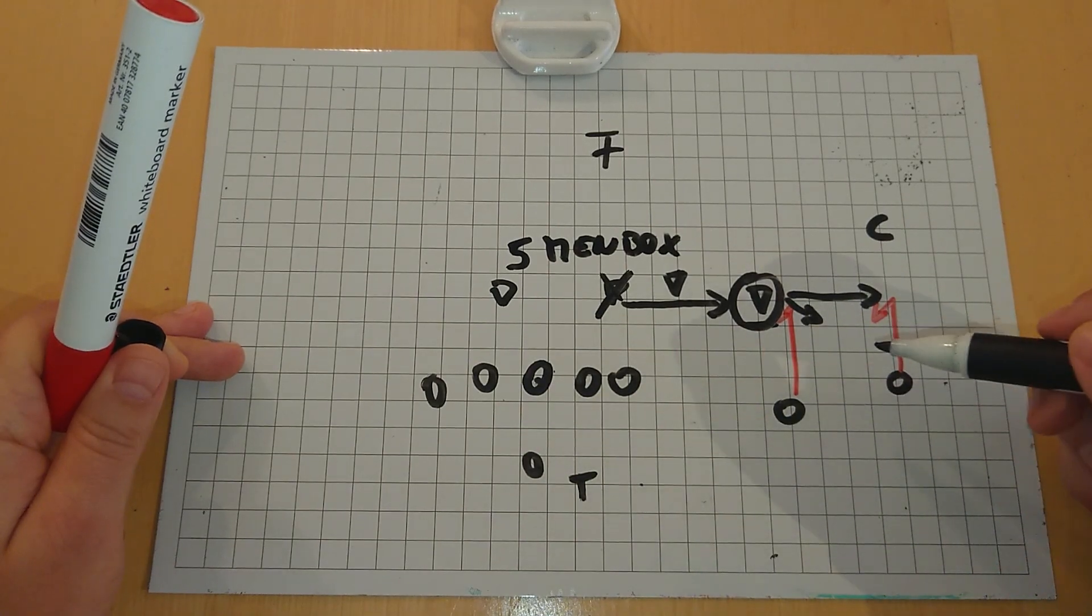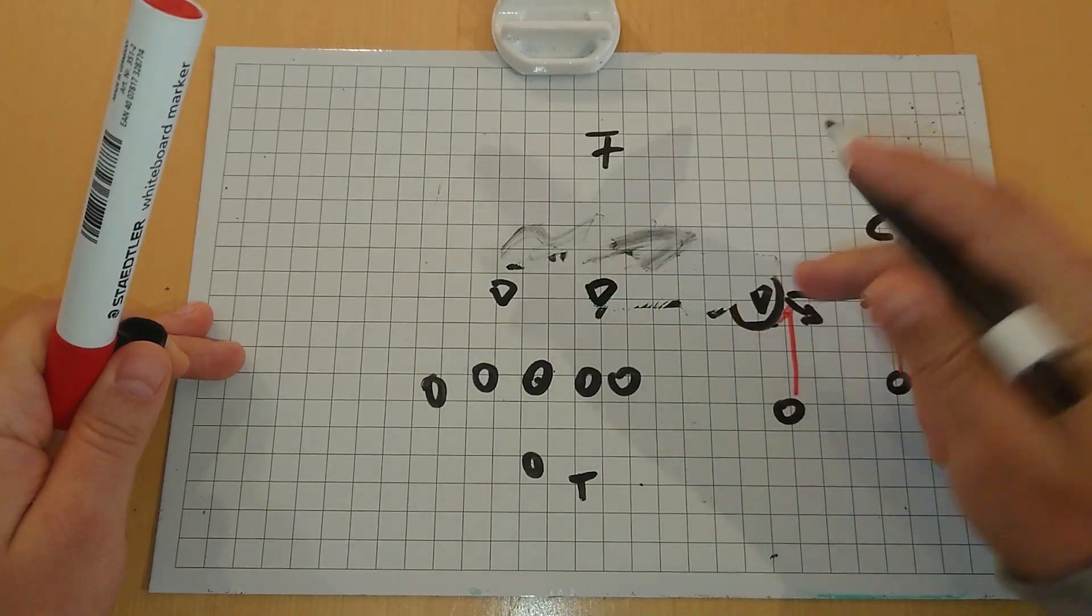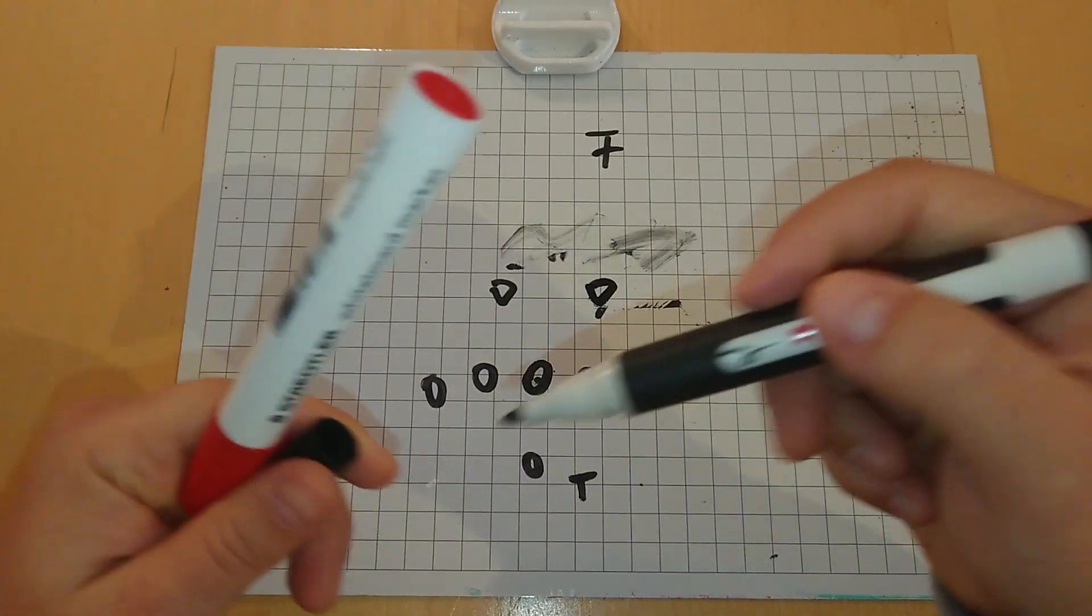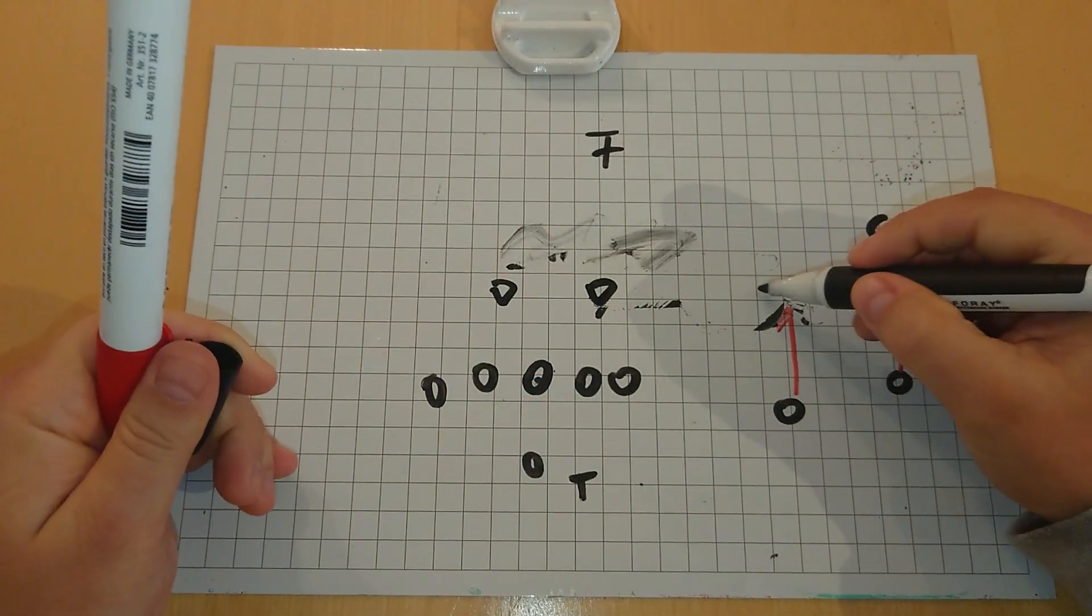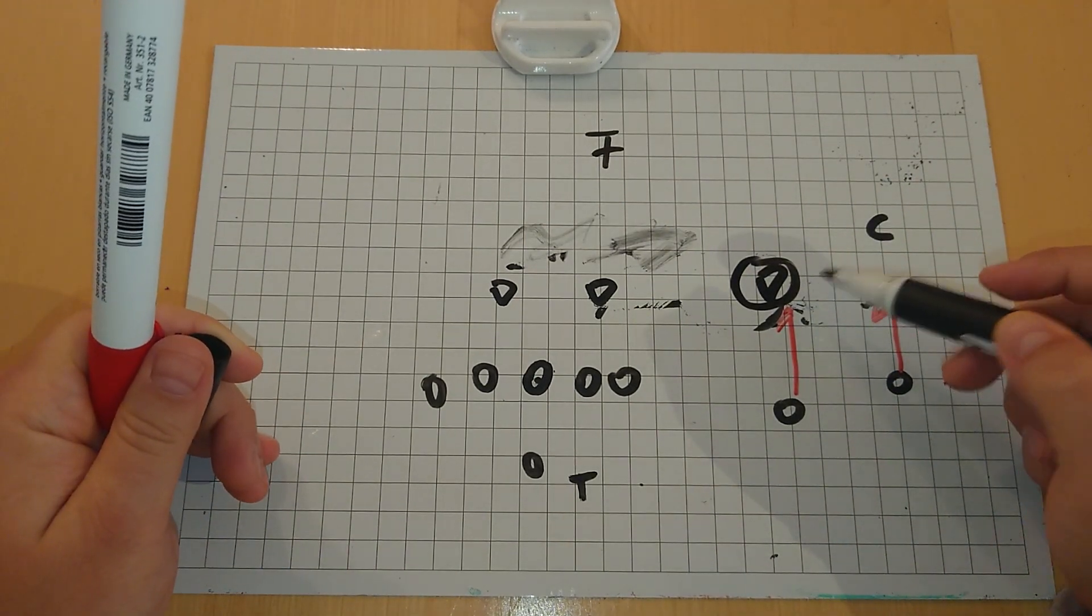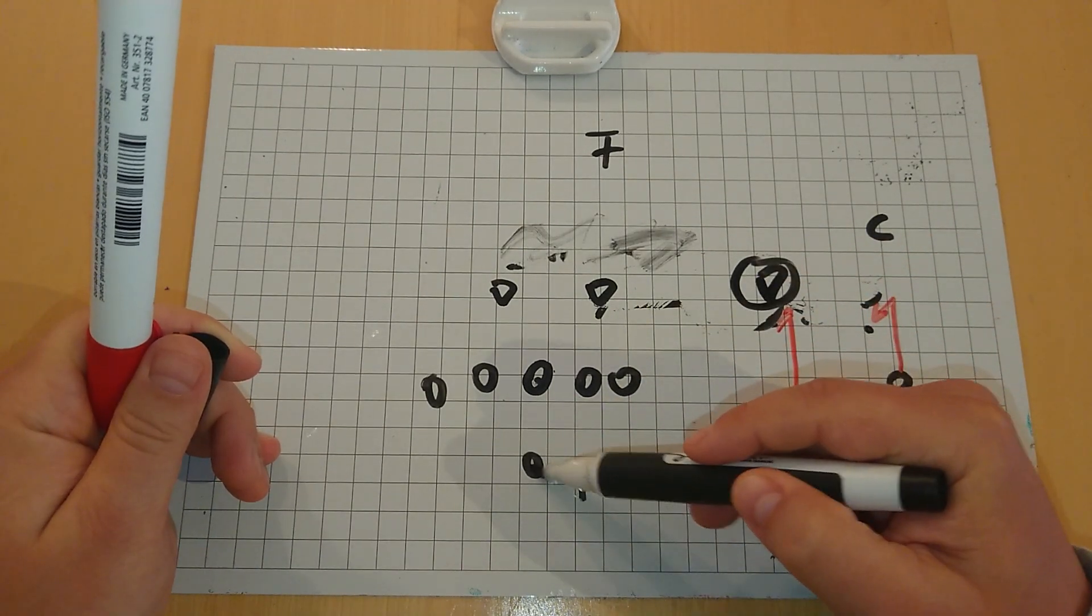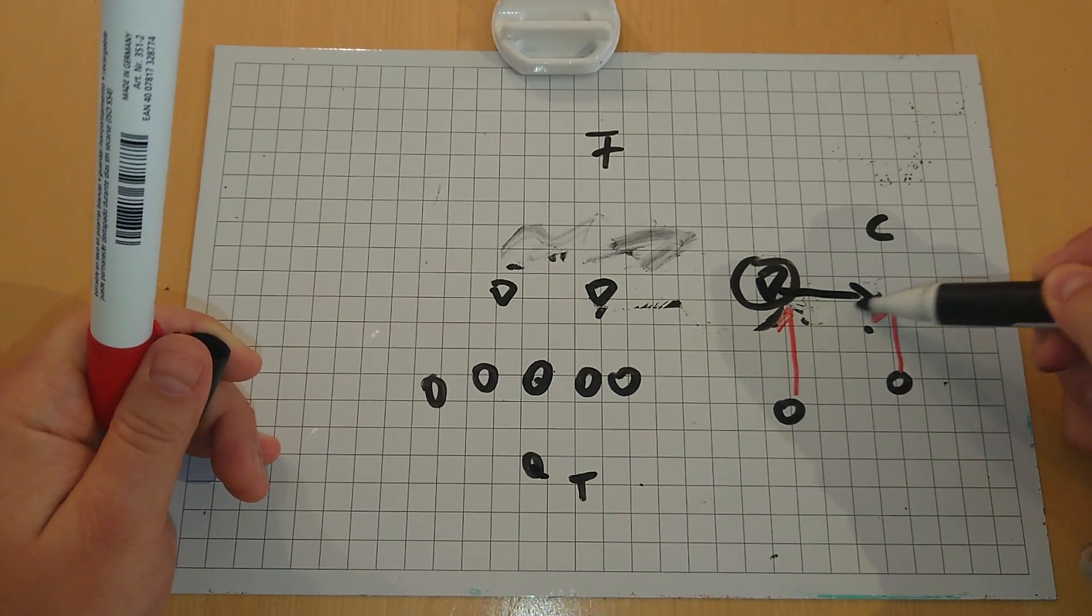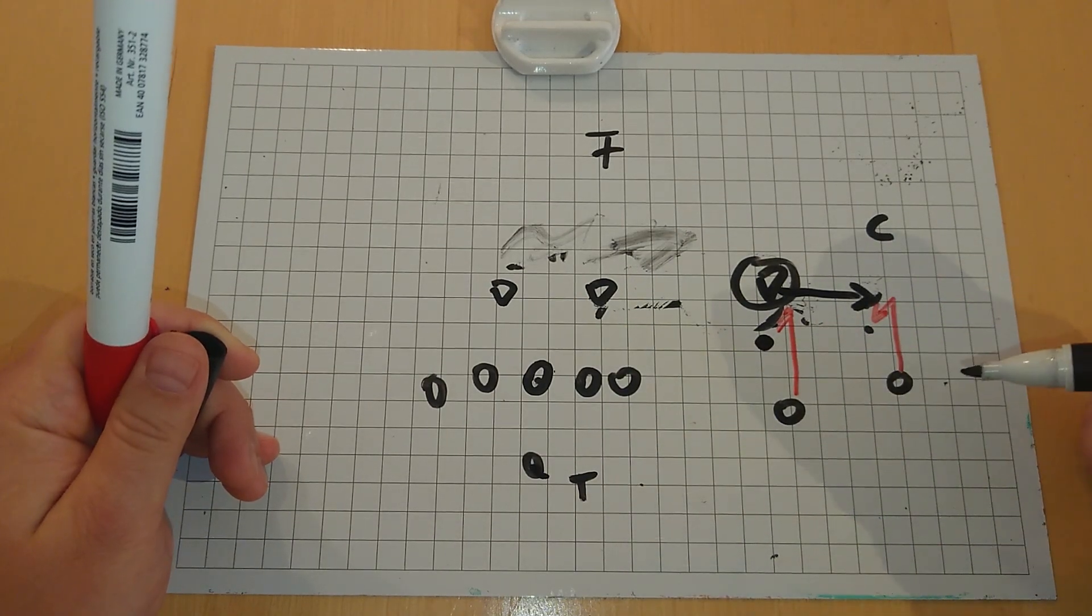If we stay out here, the read for the quarterback is clear. We do have one isolated defender, the outside linebacker or in the boundary also often the roll down safety. This defender is our read. If he's not fast outside, we will hit the outside stop every time. But if our quarterback catches the snap and he already sees this linebacker sprinting out towards number one, we will hit the slot receiver.